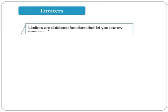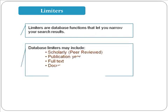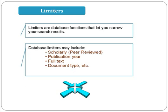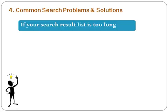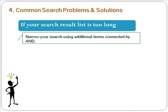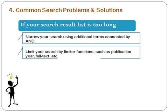Another helpful tool in database searching is limiters, which let you narrow down your search results. Common database limiters include scholarly peer reviewed, publication year, and full text. Here are some tips if your results list is too long: narrow your search with additional terms connected by AND, or use limiters such as publication year and full text.